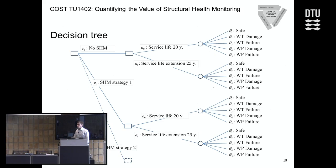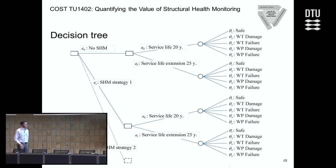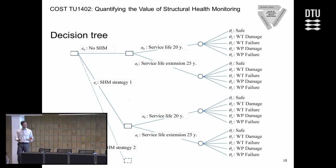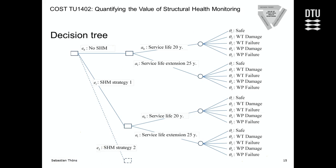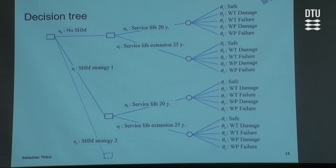Now we return to the value of information analysis and the generic decision tree. We have here the prior decision analysis with no SHM, and then three SHM strategies. By how we modeled the SHM outcomes, we have no indication branch — indications are related to probability of detection — but we do have the action branch.